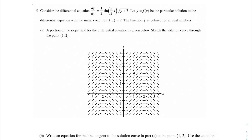What's up my AP Calc champions? In this problem we're going to be going over this differential equation: dy over dx is equal to one half sine of five over two times x times the square root of y plus seven. We're saying that y equals f of x is the particular solution to the differential equation with an initial condition f of one is equal to two, and it's defined for all real numbers. A portion of the slope field for the differential equation is given below. Sketch the solution curve through the point one, two.